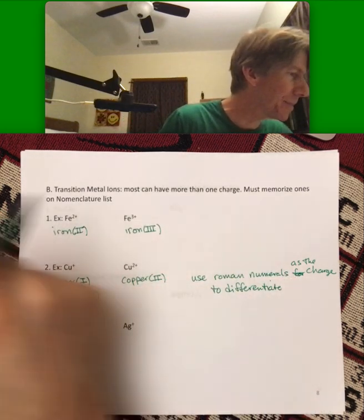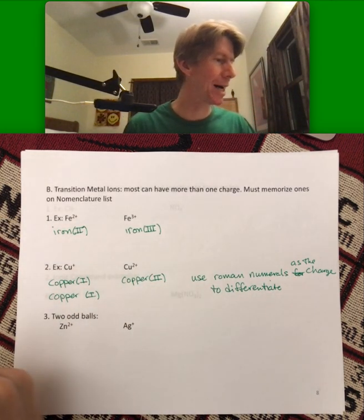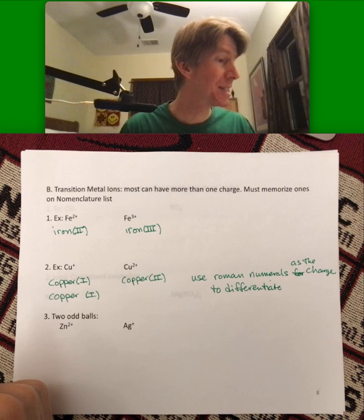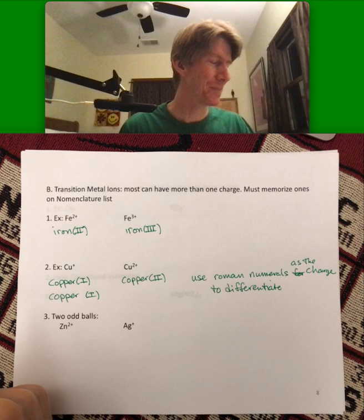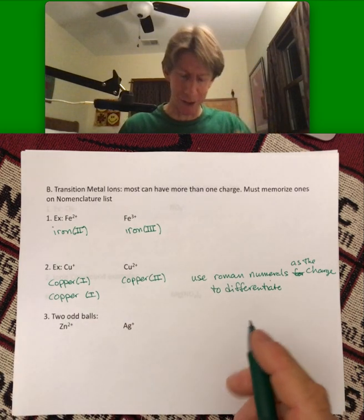There aren't that many of them. It looks like nickel, iron, chromium, tin, lead. Well as I name them, there are a number of them. But there are two oddballs.